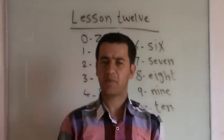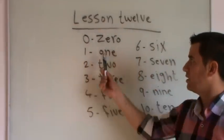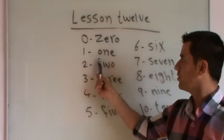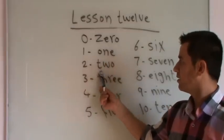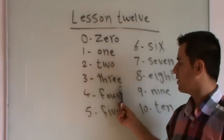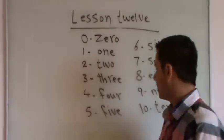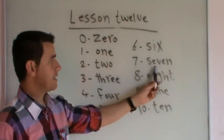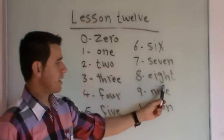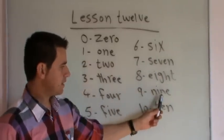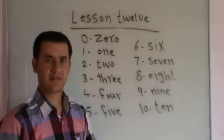These are the numbers. Repeat it after me. Zero. One. Two. Three. Four. Five. Six. Seven. Eight. Nine. Ten.